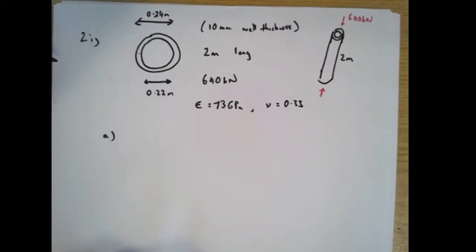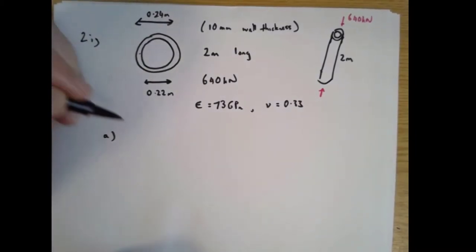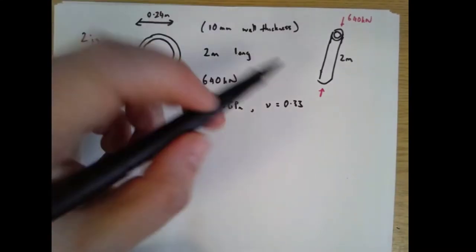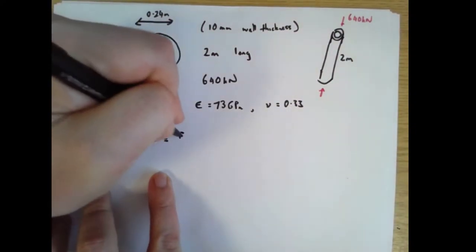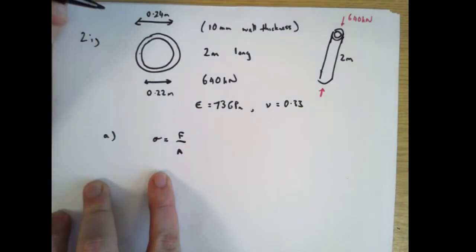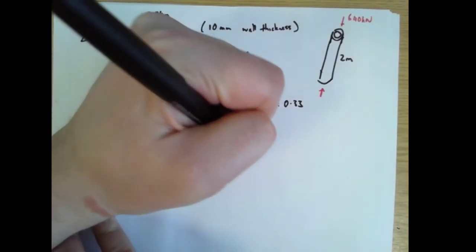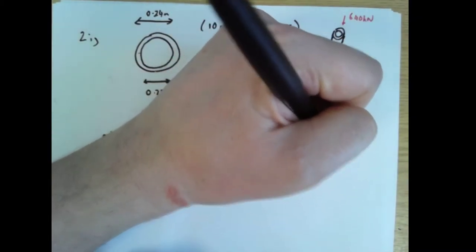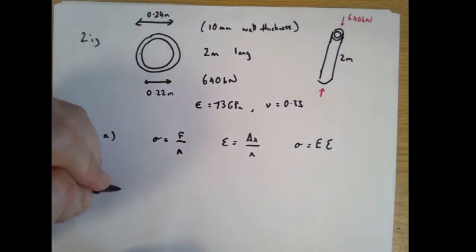Next, we want to calculate the change in length of the pipe. So that's Part A. This is really our stress-strain question. If we calculate a strain, we'll be able to calculate a change in length. So let's just straight away write down our stress-strain formulae. Stress is force over area. Strain is change in length divided by original length. And stress is Young's modulus times strain. We know some of those things. We don't yet know an area.